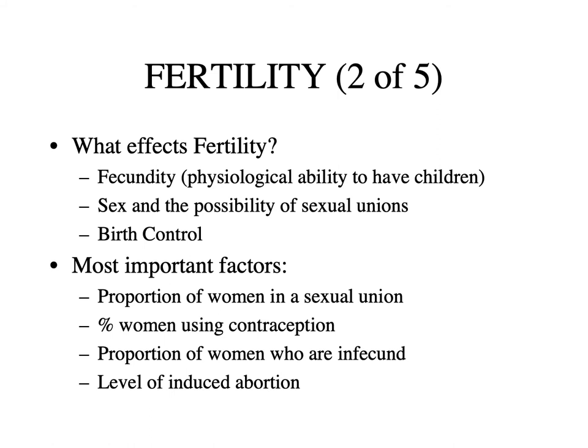What affects fertility? The first factor is fecundity — the physiological ability to have children, including the ability to have intercourse, the ability to conceive, and the ability to carry a pregnancy to term. The second is sex and the possibility of sexual union. The third is the availability of birth control. The most important factors are the proportion of women in a sexual union, the percentage using contraception, the proportion who are infecund, and the level of induced abortion.